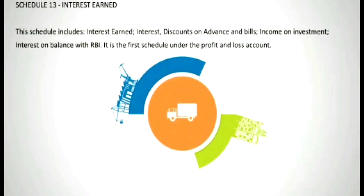First in the profit and loss is Schedule 13, Interest Earned. The schedule includes interest earned, interest and discount on advances and bills, income on investment, and interest on balance with RBI. It is the first schedule under the profit and loss account. The income earned by the banking company is to be recorded in this schedule.